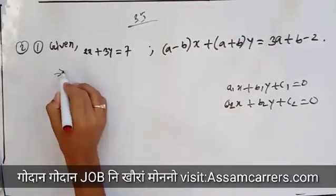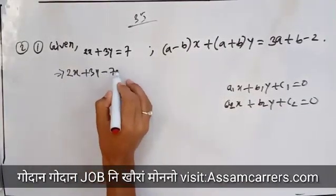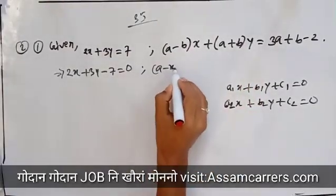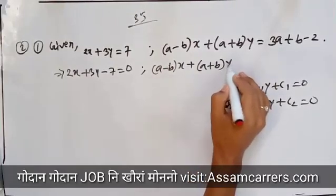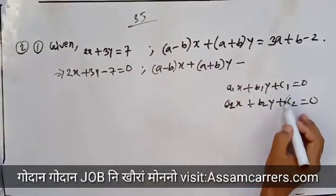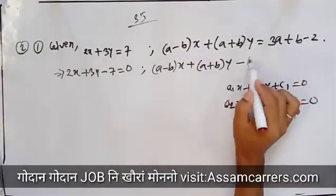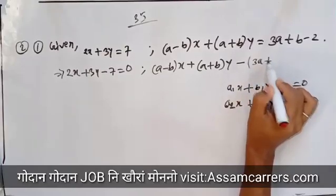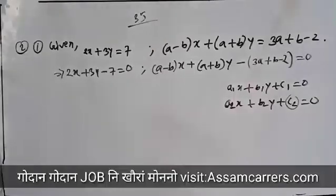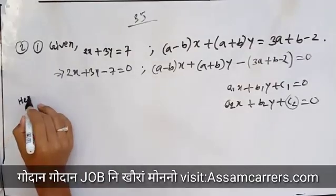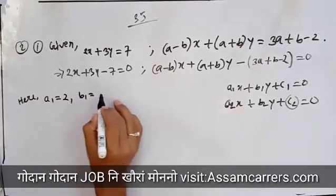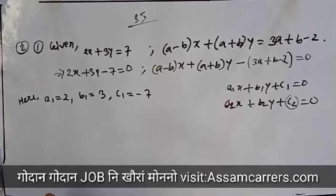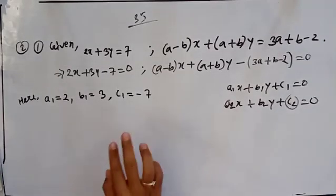I call it a formula. So this implies that 2x plus 3y minus 7 equal to 0, and (a minus b)x plus (a plus b)y minus (3a plus b minus 2) equal to 0.